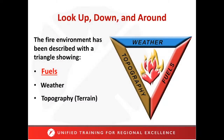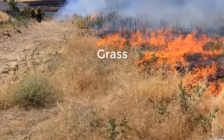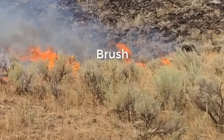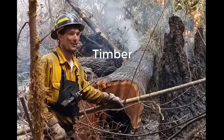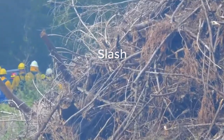The fire behavior triangle of fuels, weather, and topography is a mnemonic that explains how these three components interact on a large scale in the risky, unpredictable nature of brush and wildland fires. There are four basic fuel types: grass, brush, timber, and slash fuel types.